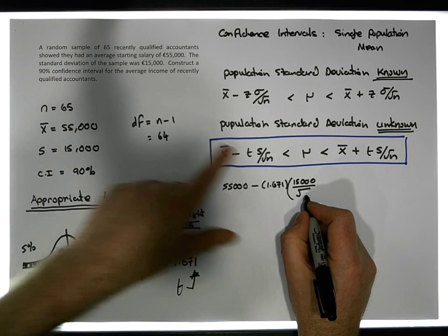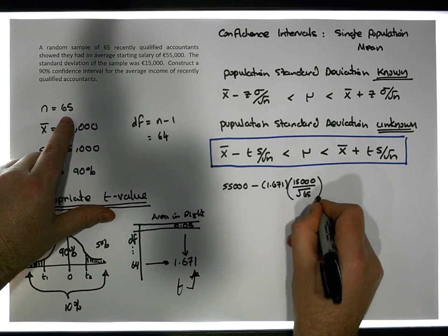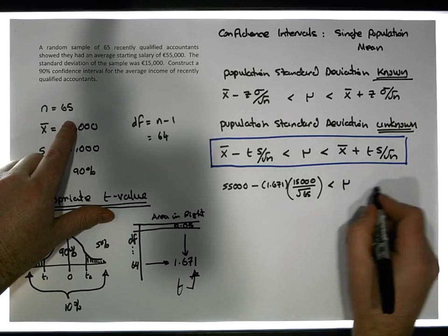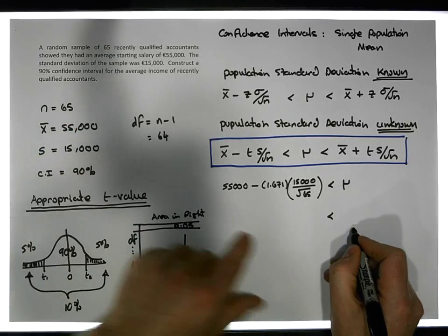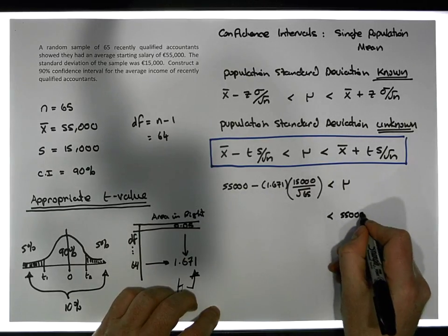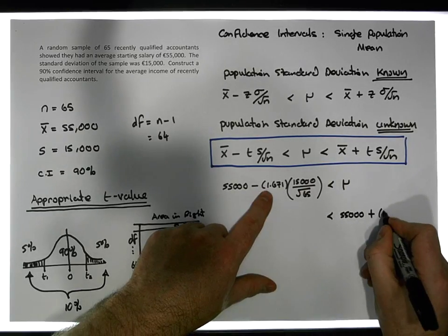All over the square root of the sample size, which is 65. We know that the population mean is bigger than that particular value but also less than another value, which is the sample mean, 55,000 euros.